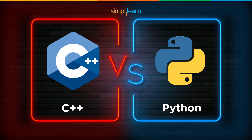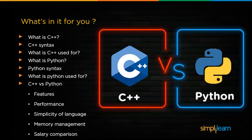Let's have a look at what we'll be covering today. First, we'll look at what C++ is, its syntax, and what it's used for. Then we'll move to what Python is, its syntax, and what Python is used for. Then we'll compare the two languages based on different parameters: features, performance, simplicity, and memory management.